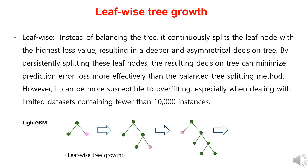The leaf-wise method used in LightGBM continuously splits the node of the leaf with the highest loss value, creating deeper and more asymmetrical decision trees. By persistently splitting the leaf nodes in the direction that minimizes loss, this method can more effectively minimize prediction error loss than the level-wise tree-splitting method. However, it can be more susceptible to overfitting, especially when dealing with limited datasets containing fewer than 10,000 instances.